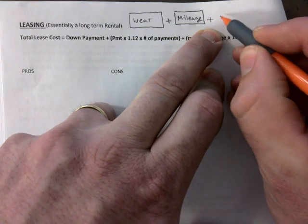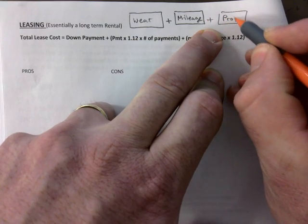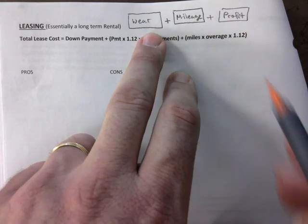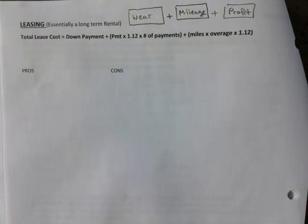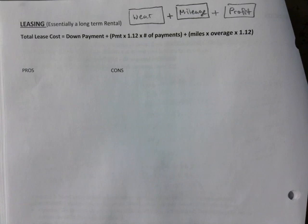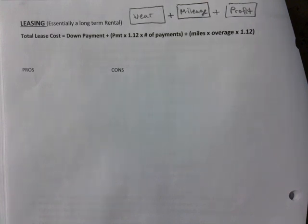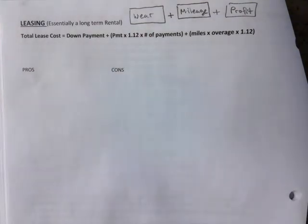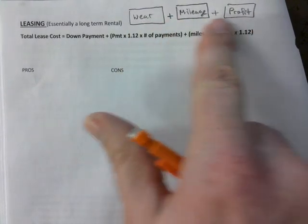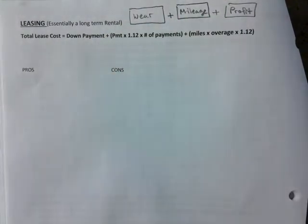So they want to make a little bit of profit. In the background, that's what they charge you. When you lease a car, they charge you for wear, for the mileage, and for profit. If you destroy the car, if you have a dog and the dog just absolutely wrecks the car, they're going to charge you even more when you bring it back. This is just talking normal wear.